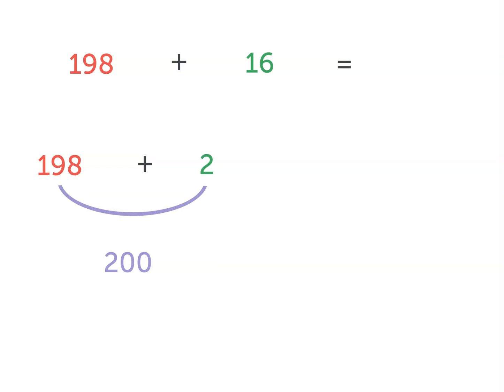Now we've taken this 2 from the 16, which means that we have 14 left over because 2 plus 14 is 16. This tells us that our sum of 198 plus 16 is the same as 200 plus 14, or 214. So 198 plus 16 is 214.